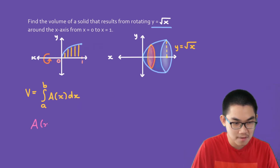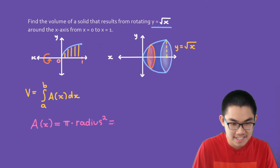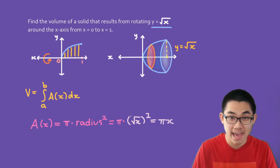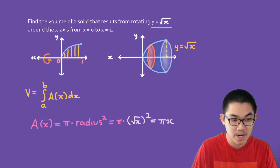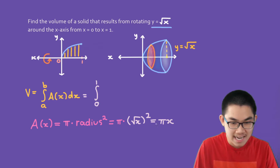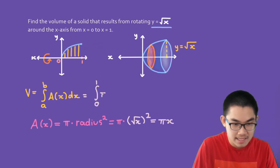The area of a circle is pi times the radius squared. This is the same as pi times the radius — which is the square root of x — to the power of 2. That simplifies to pi times x. Now we've successfully found the area function. We can put this back into the integral to find the volume. The volume goes from 0 to 1, so that's the integral from 0 to 1 of pi times x dx.